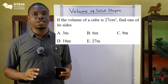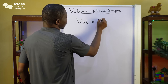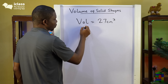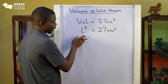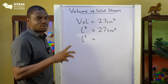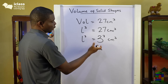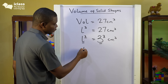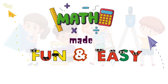Next question: if the volume of a cube is 27 centimetres cubed, find one of its sides. Remember the volume of a cube is L raised to the power 3. We want to find L. We can express 27 as 3 times 3 times 3, which is 3 raised to the power 3. By laws of indices, when the powers are the same, the bases are equal. So L equals 3 centimetres.